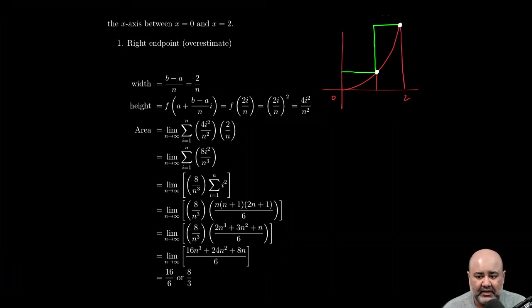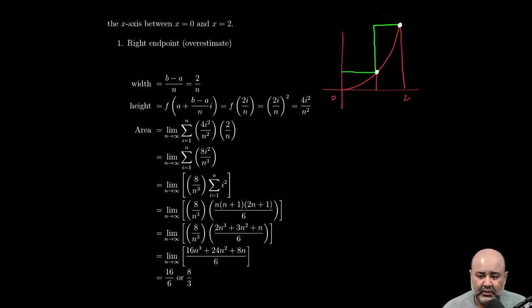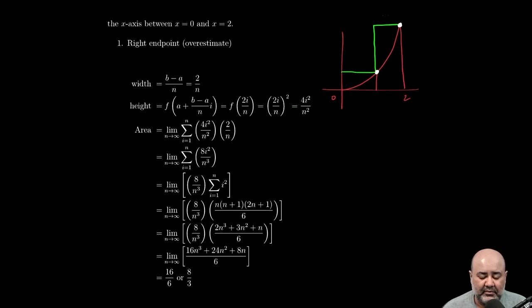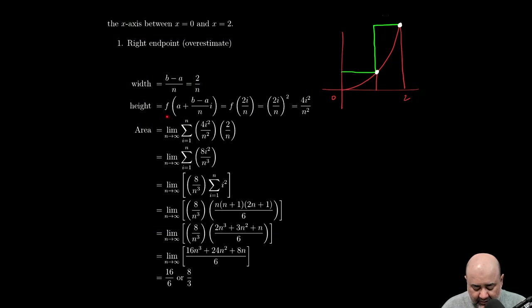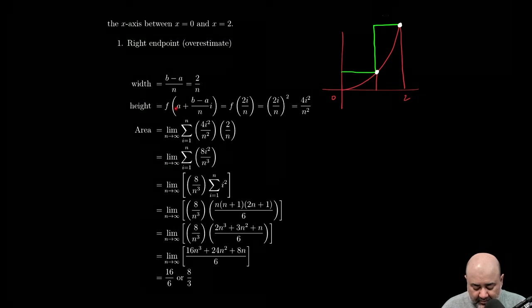This has to give me the height of the first rectangle. This has to give me the height of the second rectangle. And those are right endpoints. So I have to use right endpoints to get an overestimate or an upper sum. And vice versa, I'm going to have to use left endpoints to get an underestimate or a lower sum.